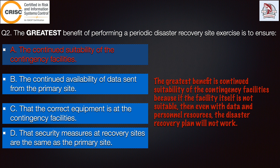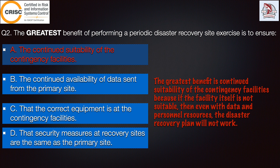Let's discuss the other incorrect options. Option B — the continued availability of data sent from the primary site — is incorrect because simply having data available at an alternate site is not the reason for periodic testing, as data alone will not help in disaster recovery. Option C — that the correct equipment is at the contingency facilities — is also incorrect because ensuring correct equipment is a subset of the site suitability requirement. Option D — that security measures at recovery sites are the same as the primary site — is also incorrect because testing security measures is likewise a subset of the site suitability requirement. That's why option A is correct.